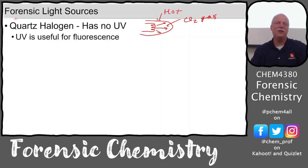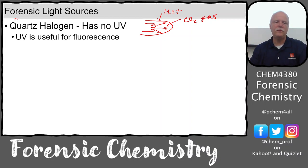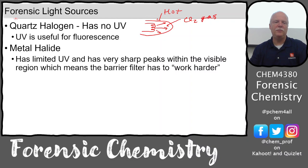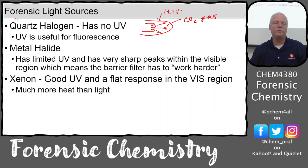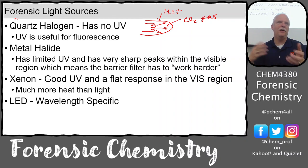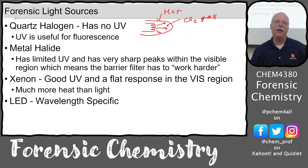Quartz halogen lights produce a lot of near infrared, making them great for near infrared visibility, but they don't produce very much UV, which is useful for fluorescence. You can get specific metal halide lamps with limited UV but very sharp peaks in the visible. A xenon lamp has a pretty flat response across the visible region — bright from blue through red — but it gives off a lot more heat, so you need a cooling fan that draws battery power.